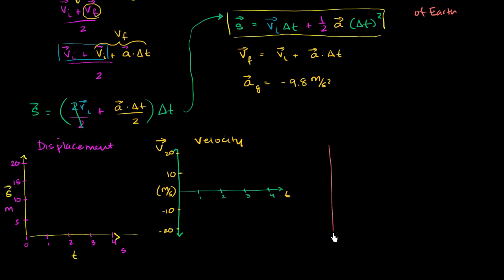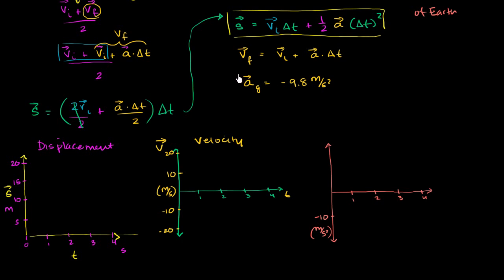Let's also do an acceleration graph. We're going to assume acceleration is constant. Time axis: 1, 2, 3, and 4 seconds. The vertical axis goes down to negative 10, in meters per second squared. We know our acceleration is negative 9.8 meters per second squared the entire time — a constant acceleration over the full 4 seconds. But let's also figure out displacement and velocity values.